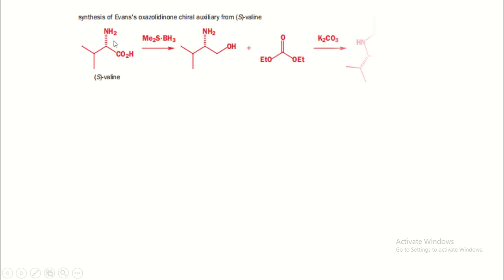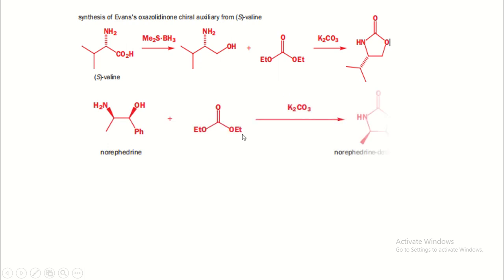Now let us focus on this reaction. In this section, the amino acid reacts with NaBH₄ to form an alcohol, then OH and NS₂ attack on the carbonyl carbon to give a five-membered ring compound. This compound is called a chiral auxiliary because it is obtained from the chiral pool. A second chiral auxiliary is obtained from a similar reaction where OH and NS₂ attack on the carbonyl carbon to form a five-membered ring.